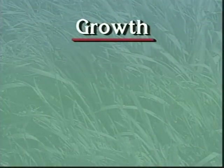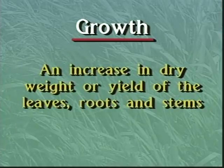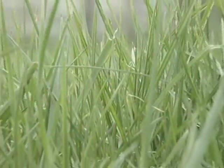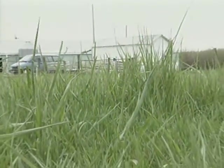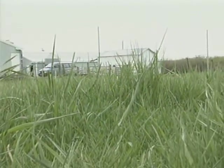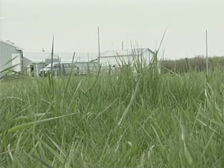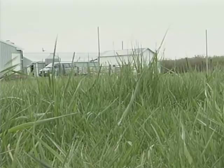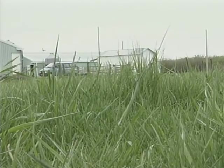Growth can be defined as an increase in dry weight or yield, most often of the leaves, roots, and stems. If leaf area and photosynthesis is lacking, growth occurs very slowly. Rapid growth and regrowth of pasture plants occurs only if the plants have good leaf area or good levels of accumulated carbohydrates.